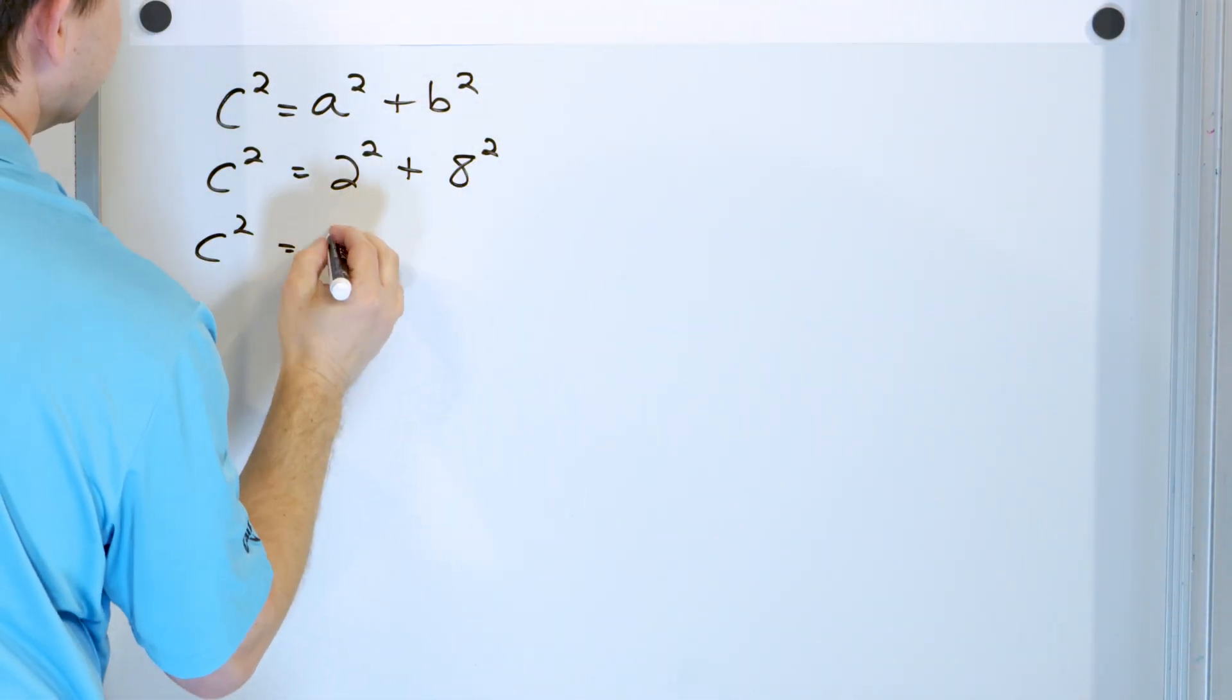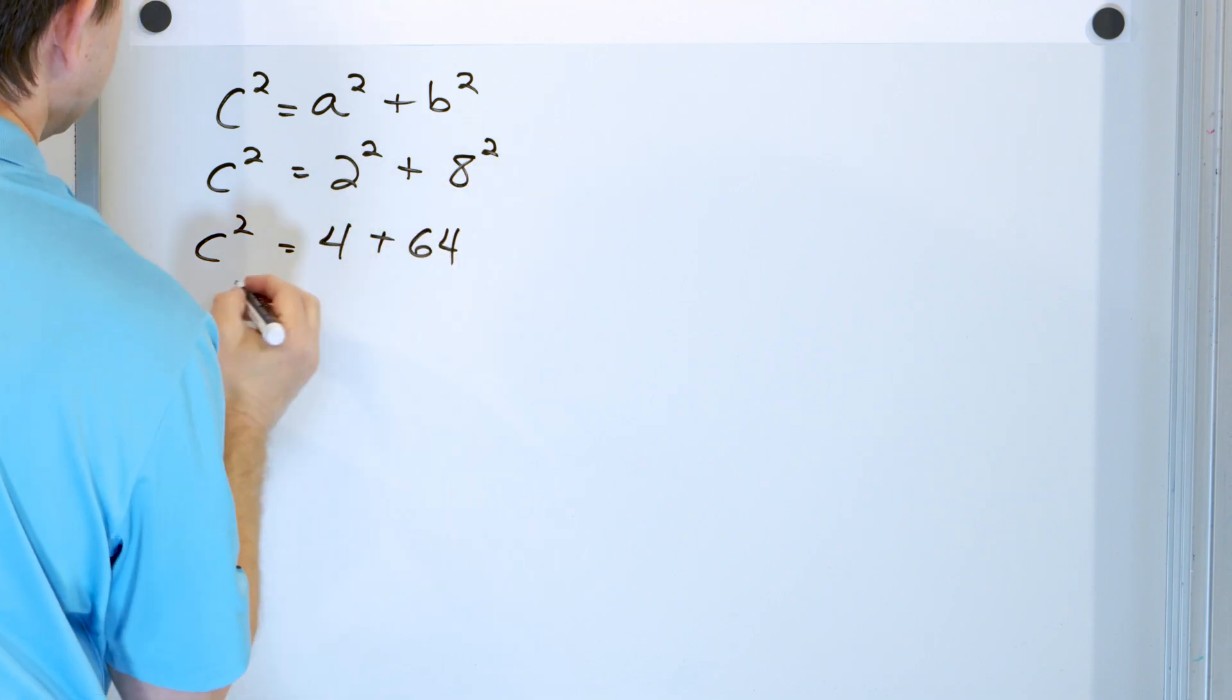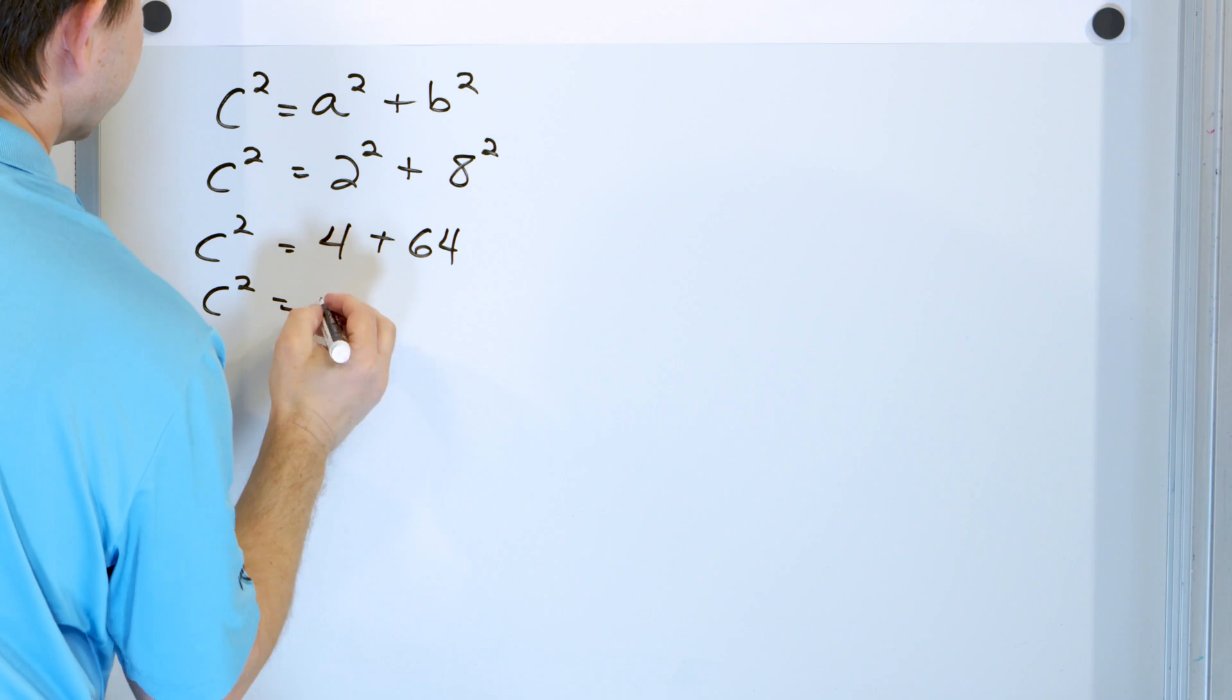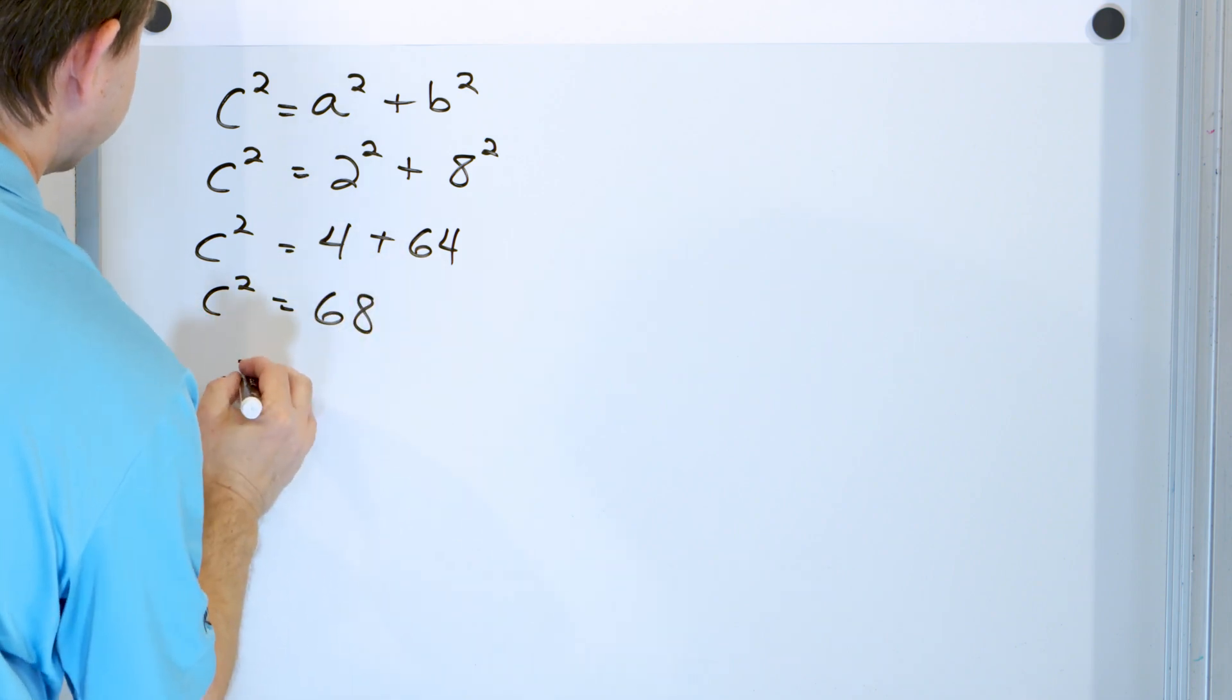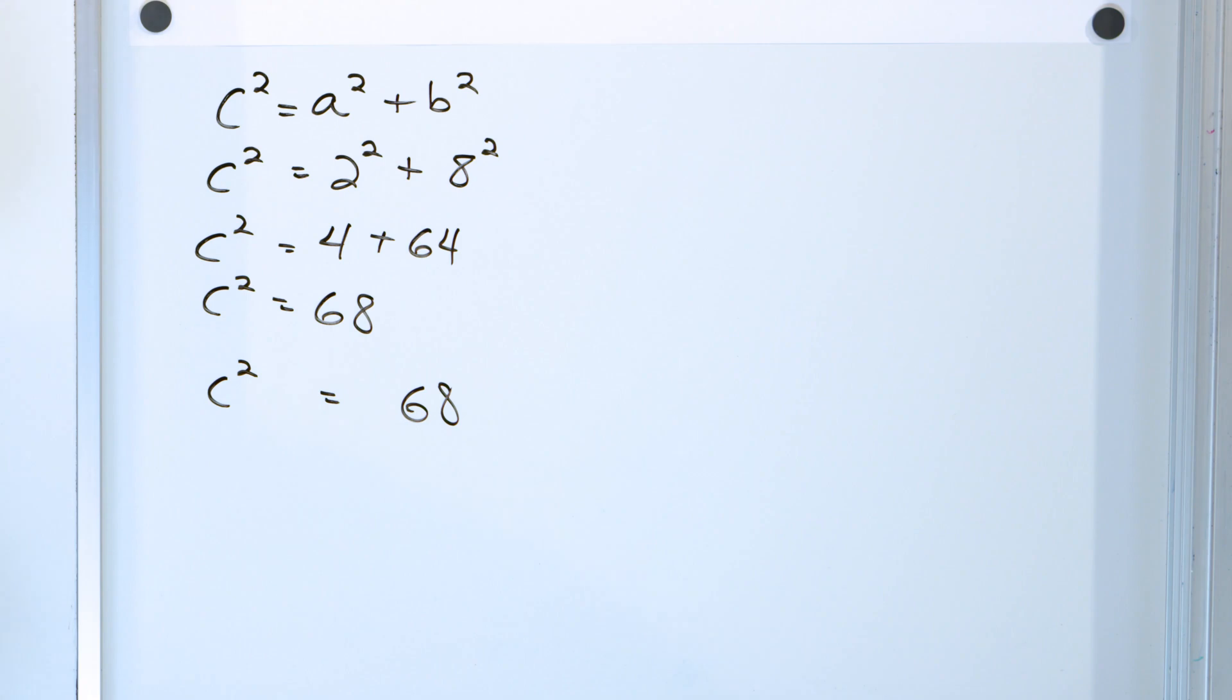And so two times two is four, and eight times eight is 64. So C² is, this becomes 68. So C² is 68.